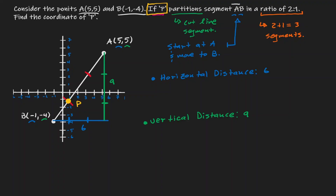Now let's find the length of each of those individual pieces. The total horizontal length was 6 and we cut it down into three equivalent pieces, so the length of each piece is 2. For the vertical, the total length was 9 and we cut it down into three equivalent pieces, so each piece has a length of 3.